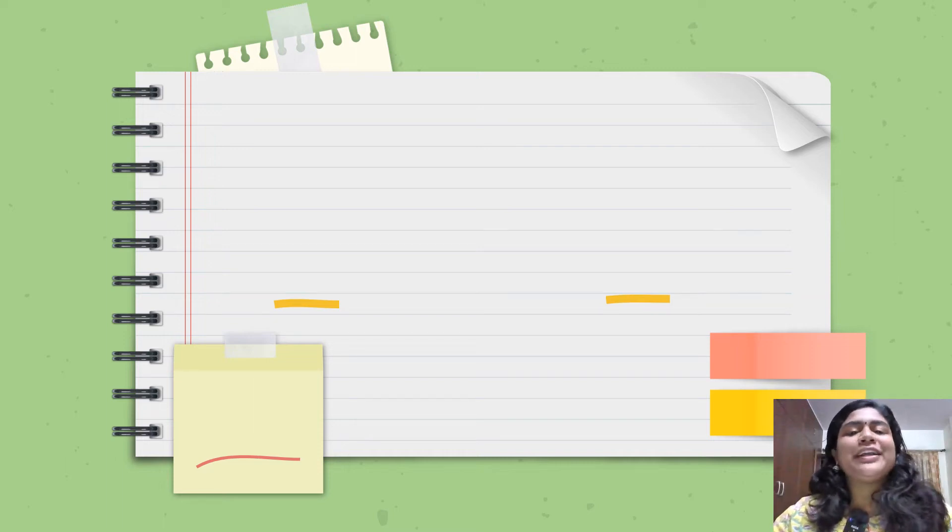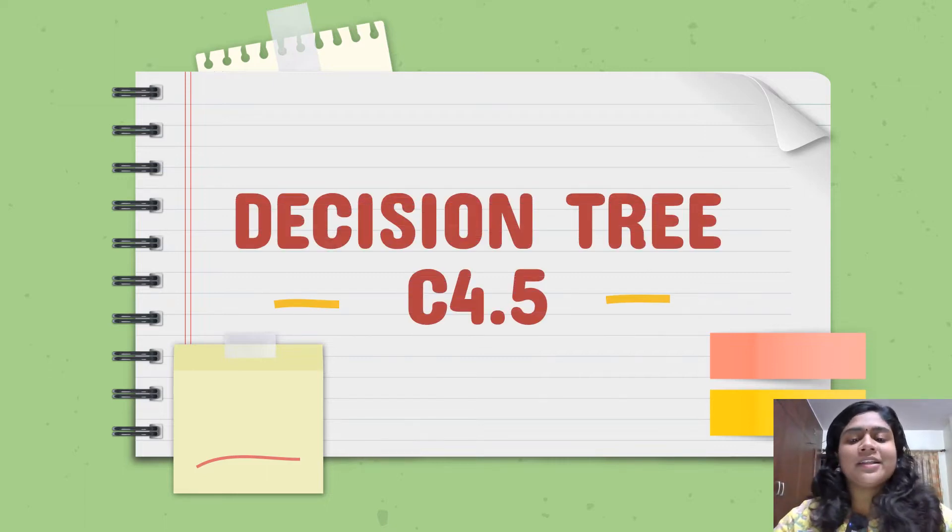Welcome to the Ecotec-E. In my previous video, I gave you a brief introduction and explanation about ID3, that is Iterative Dicotomizer 3, a decision tree algorithm. In today's video, we are going to look at a modified version of ID3, which goes by the name C4.5.